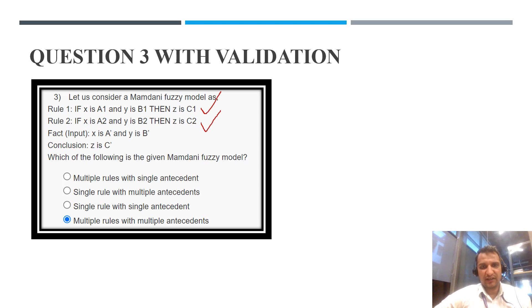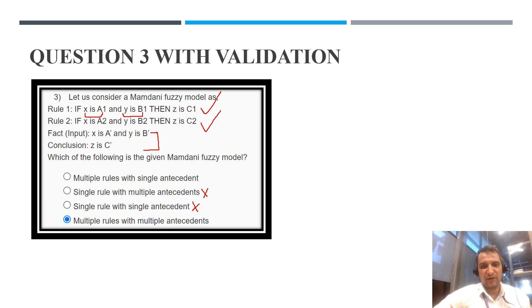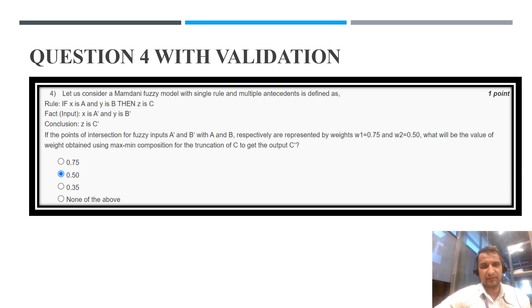Question number 3: consider rule 1 and rule 2 — it is a multiple rule question. The rule is: if X is A and Y is B then Z is C. Since there are two antecedents (X is A and Y is B) and two rules, it is multiple rule and multiple antecedent. Option D is correct.